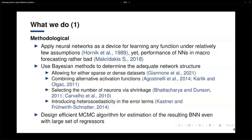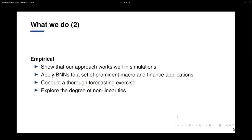For example, for the number of neurons we apply shrinkage, and the activation function is drawn within our MCMC algorithm — so we don't have to choose one activation function, but have a set of them and draw from it. We can also introduce stochastic volatility in our model, which is really useful for forecasting, especially in turbulent times. Empirically, we show our approach works well in simulations, and we apply it to a set of prominent macro and finance applications, conducting forecasting exercises and exploring the degree of nonlinearities in our datasets.